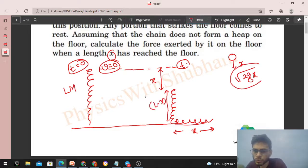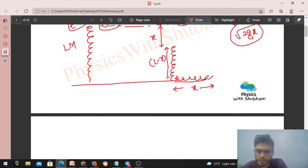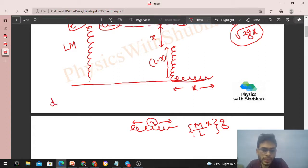Humye nikalna kya hai? Humye ye nikalna hai ki ye joh chain hai na, ye kitna force laga rahi hai aapke floor pe. So free body diagram agar main draw karu, to ye joh x length hai ye aapke floor pe aagyi. So ek toh iska weight lagega. Iska weight kaise nikal hoge? Chain uniform hai, mass per unit length into x - x length ka mass into g. So itna weight lag raha hai, but this is not the answer.